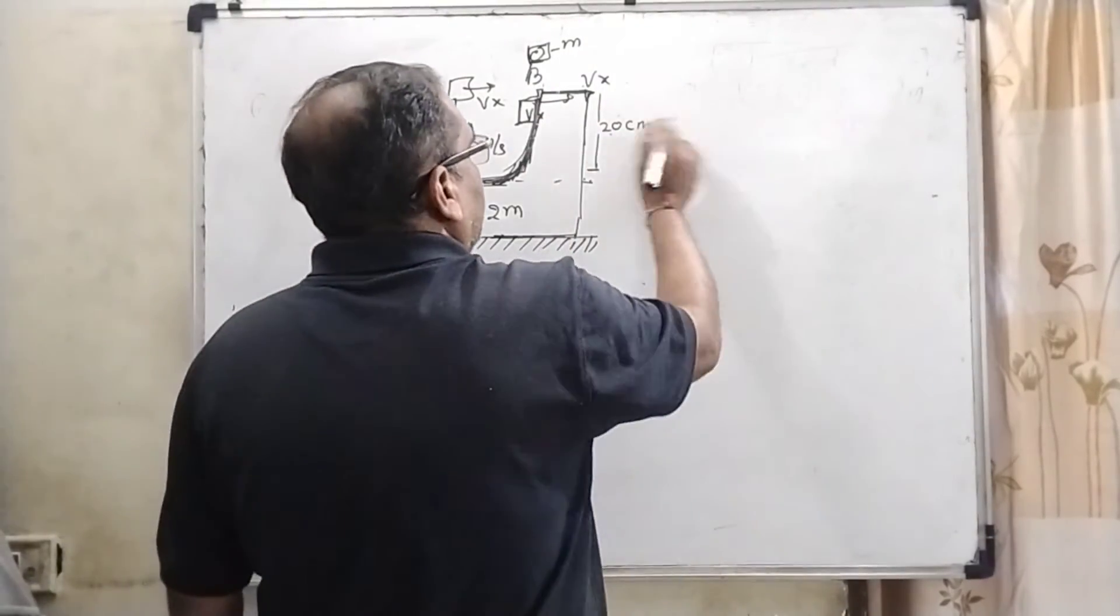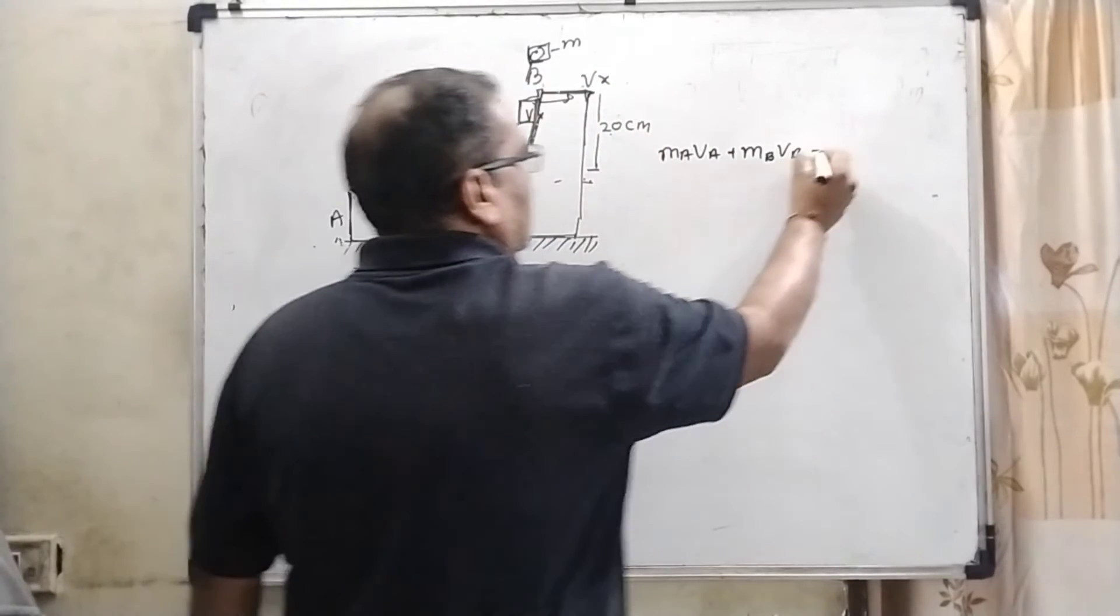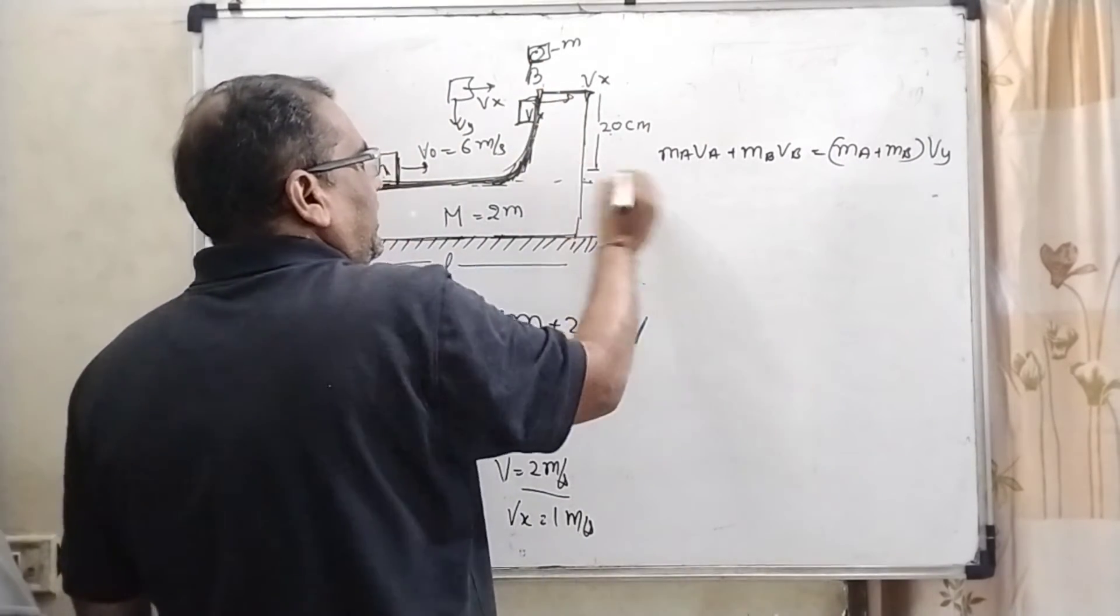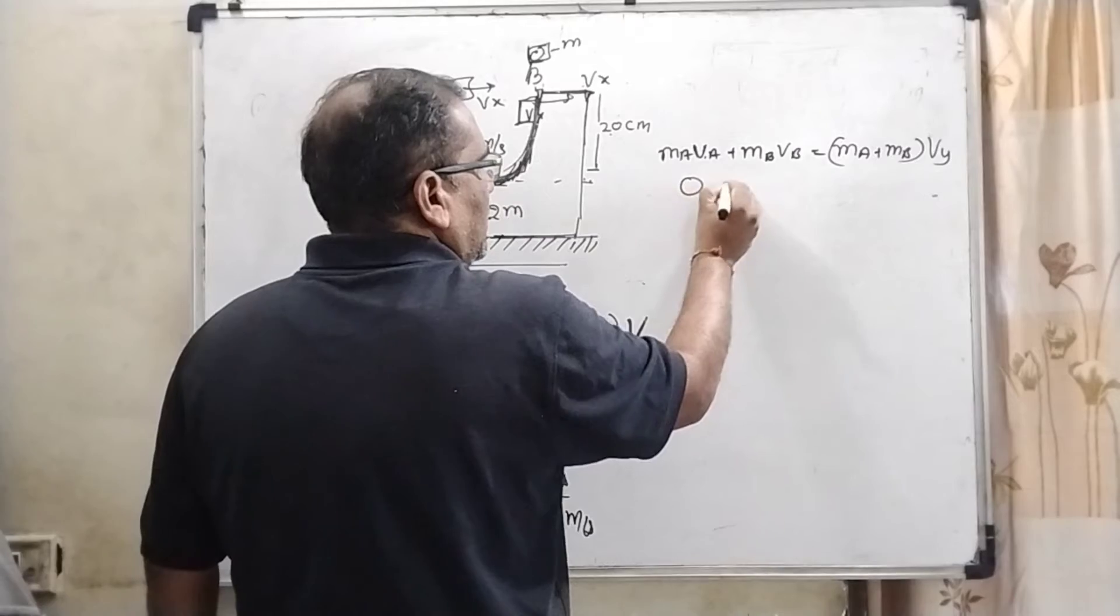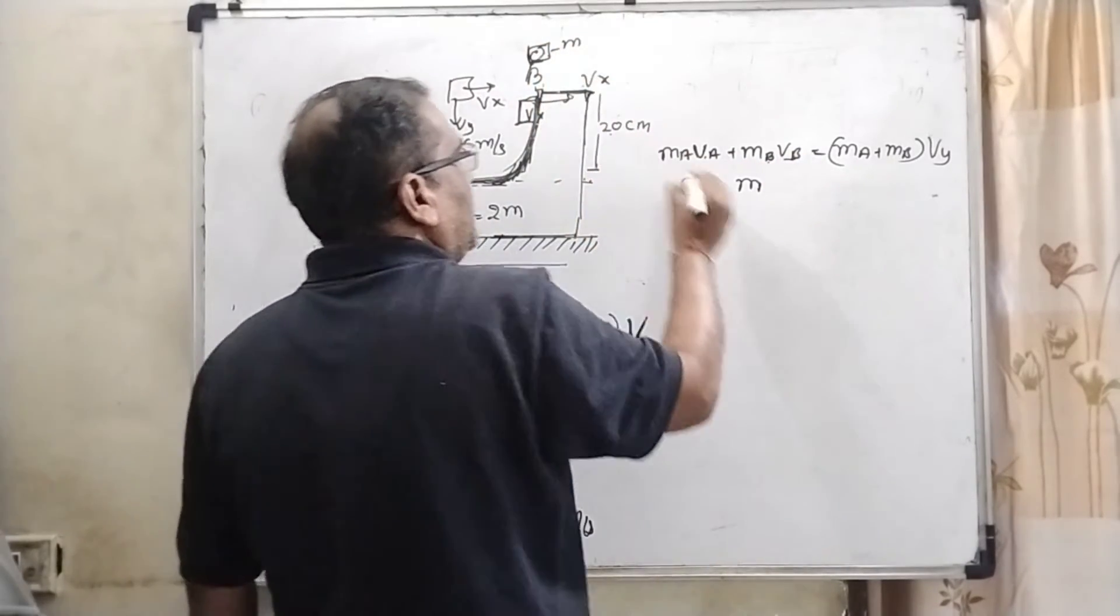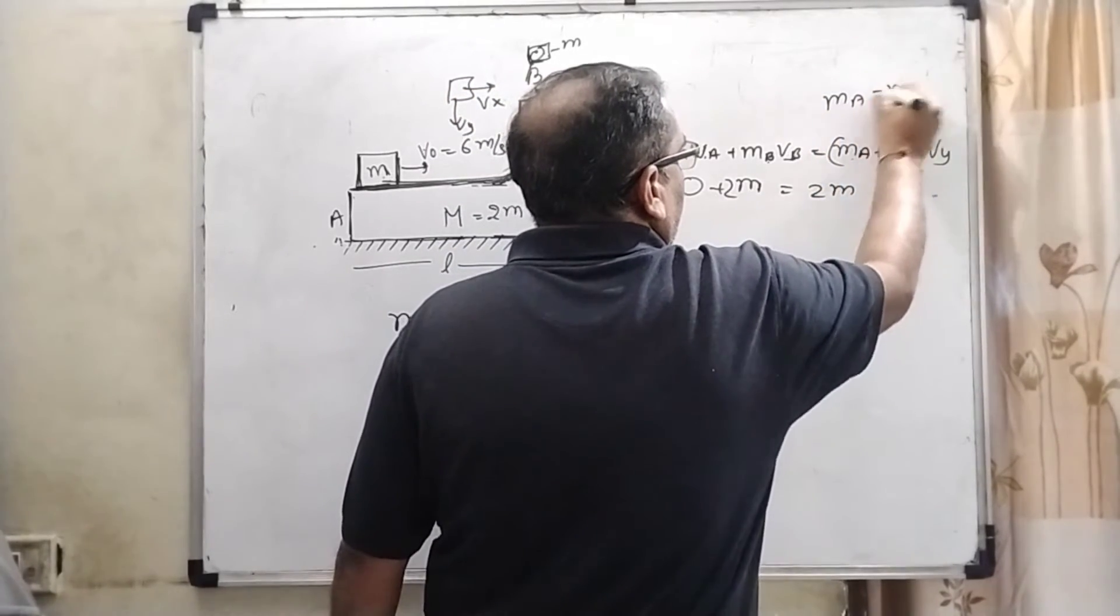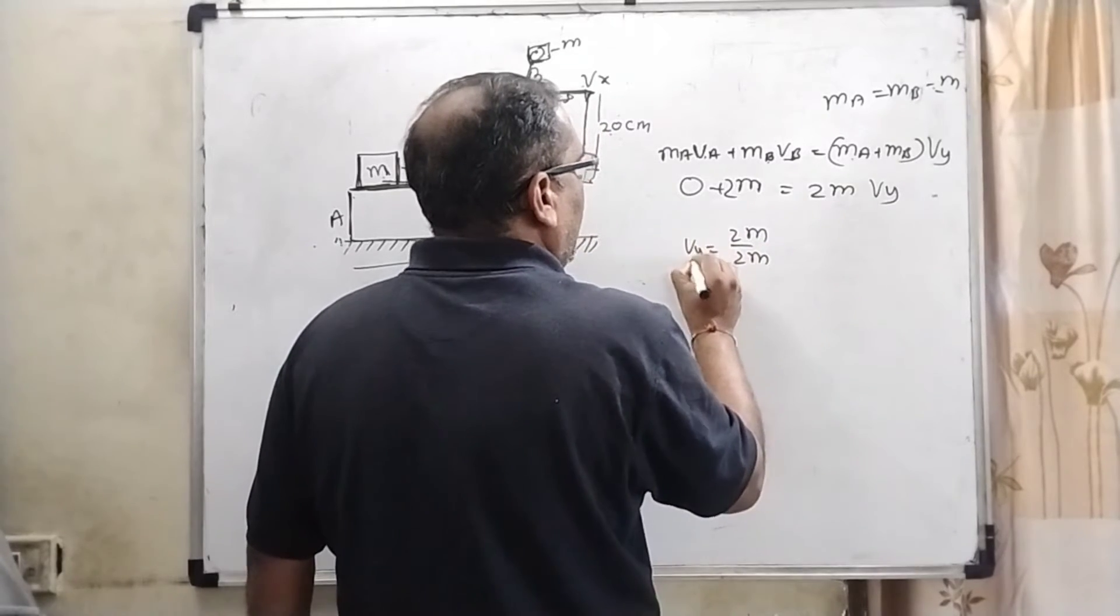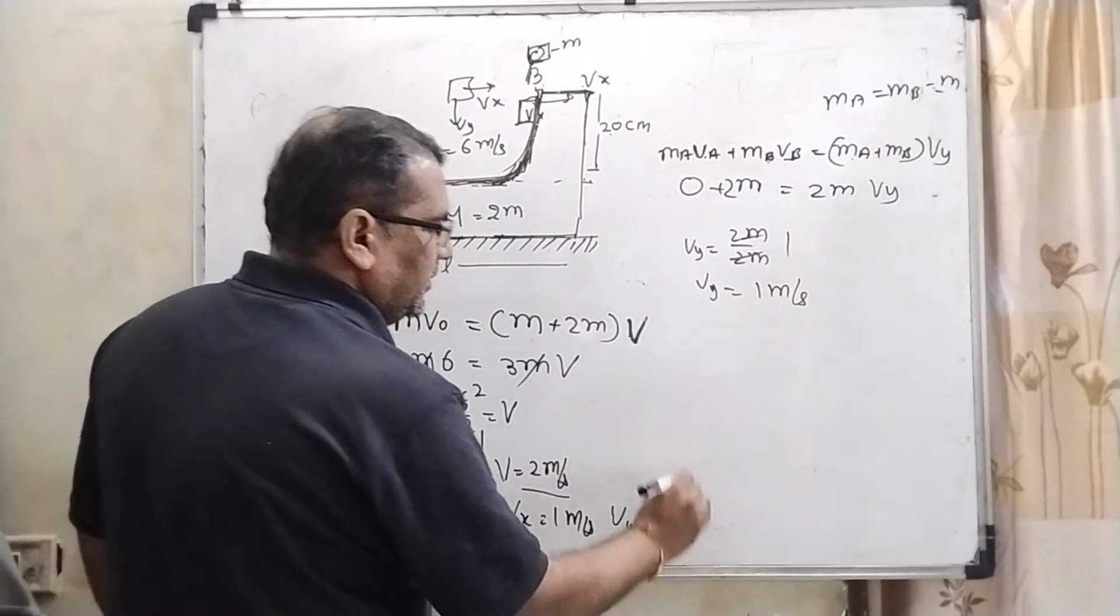Now for the y component that we know that ma va plus mb vb when that is stuck equals ma plus mb times vy. So when it gets separated, then its velocity along the, when it reaches up to the at maximum height, that velocity is 0. And here m v that is same mass. So it is m and here the velocity of given this block that is 2 meter per second. So here 2m, again 2m because ma equal to mb equal to m given that is the same mass. So 2m upon 2m that is vy. So here vy equal to again 1 meter per second. So vy equal to 1 meter per second.